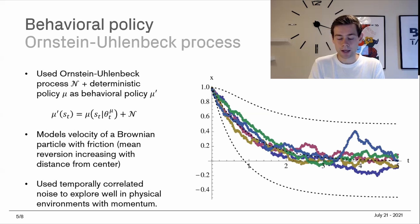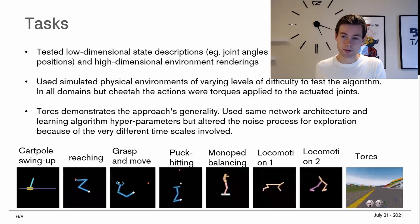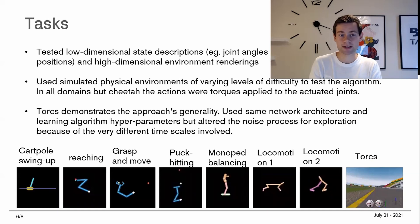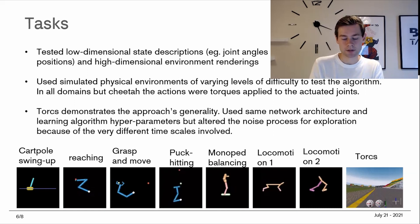For the tasks they applied this framework to, there is significant momentum in some environments. They tested both low-dimensional state descriptions — for example, joint angles and positions — and high-dimensional environmental renderings, meaning raw pixels fed into the network. There's a video link provided that illustrates these tasks.